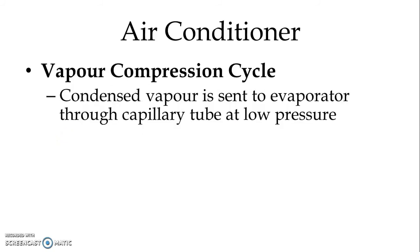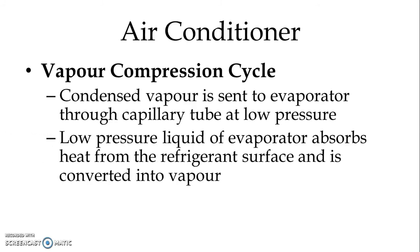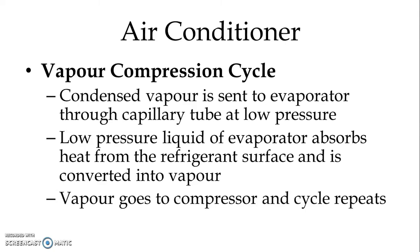Condensed vapor is sent to the evaporator through the capillary tube at low pressure. The low pressure liquid at the evaporator absorbs heat from the refrigerant surface and is converted into vapor. The vapor goes back to the compressor and this cycle repeats again and again.